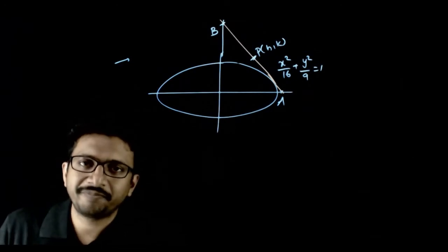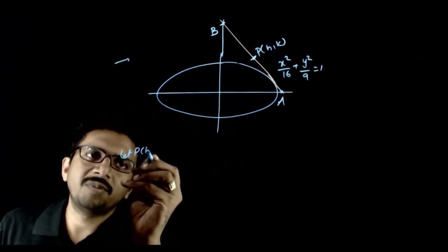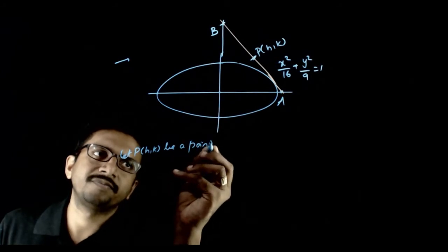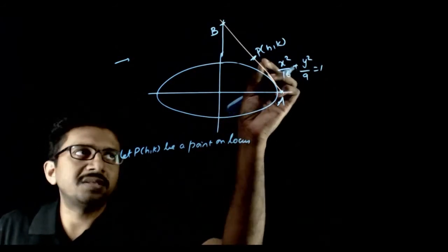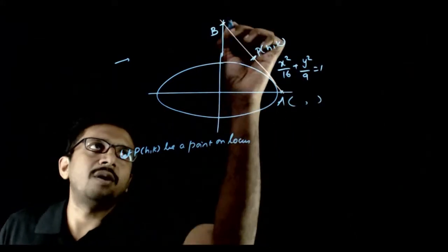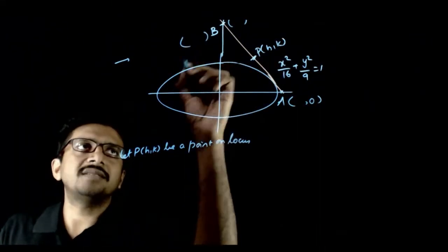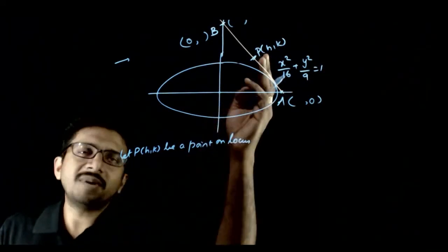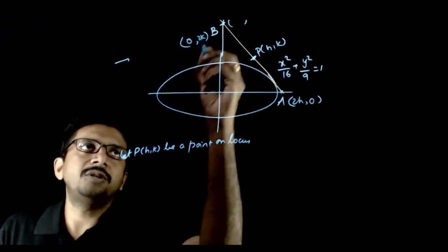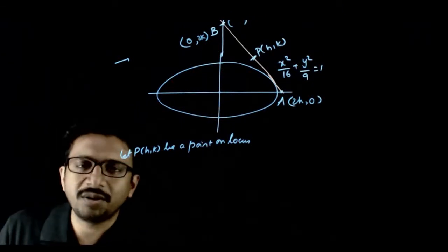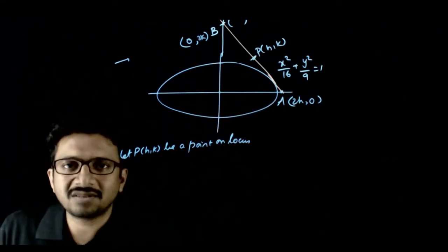Let us see how to analytically find the equation of this curve. Now that you have observed the animation of what is being asked, let us try to solve this analytically. Let (h, k) be a point on the locus. Since (h, k) is a point on the locus, it should be the midpoint of A and B. A is on the x-axis so its y-coordinate is 0, and B is on the y-axis so its x-coordinate is 0. Since (h, k) is the midpoint, the coordinates of A are (2h, 0) and B are (0, 2k). According to the given question, the line joining these two points has to be a tangent to this ellipse.